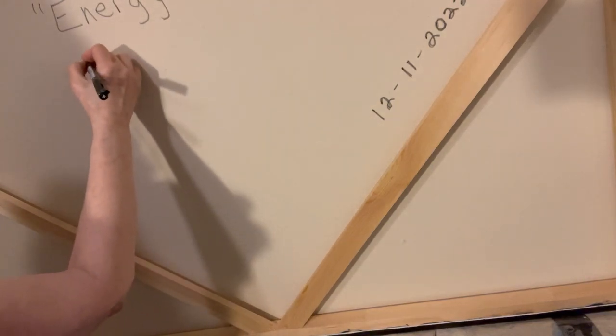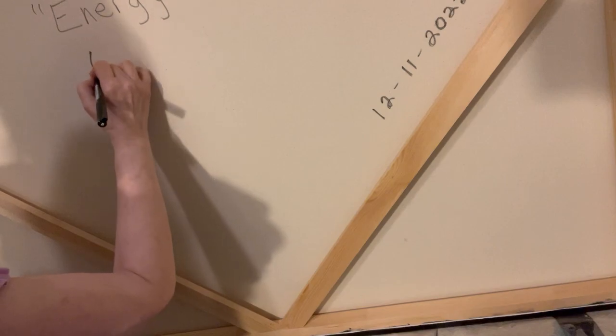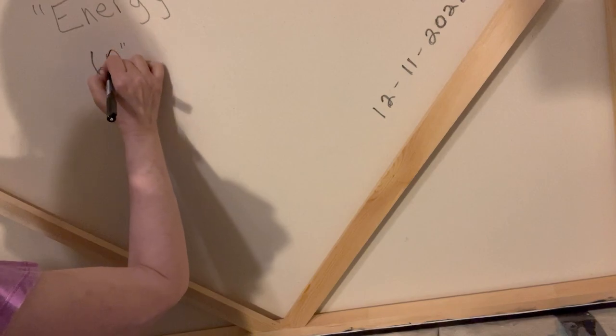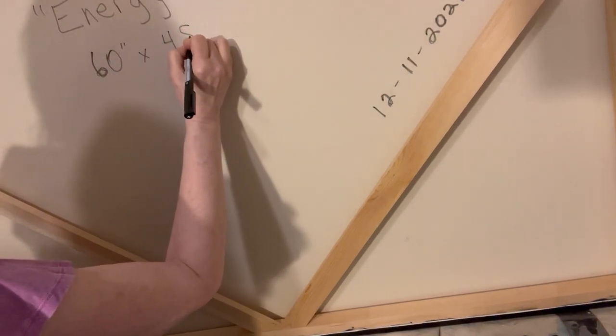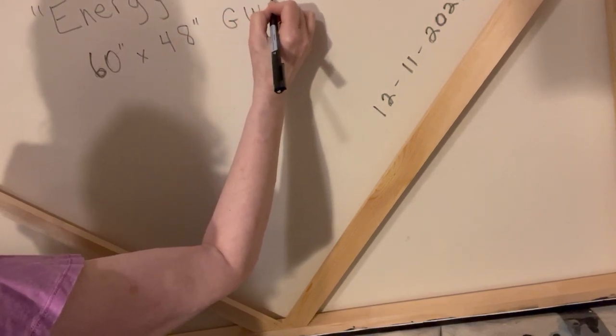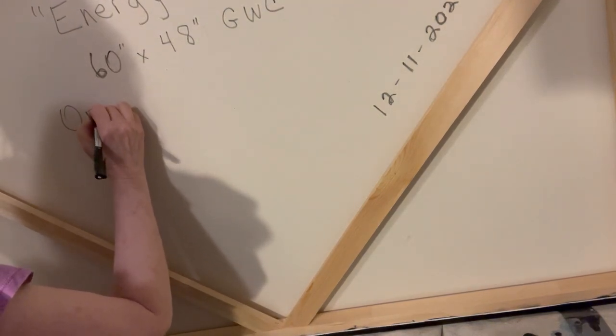And it is 60 inches by 48 inches, and always put the GWC, which means gallery wrapped canvas, and then I'll put the words original.